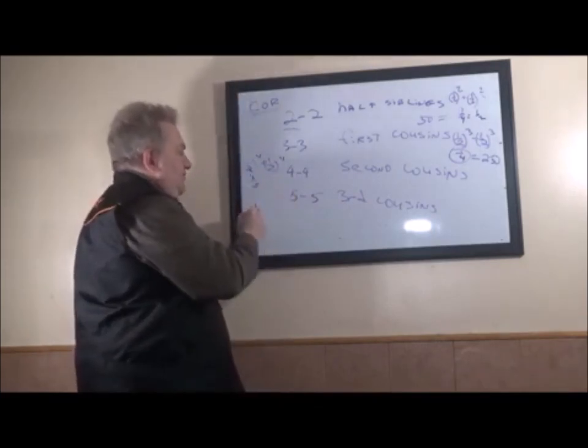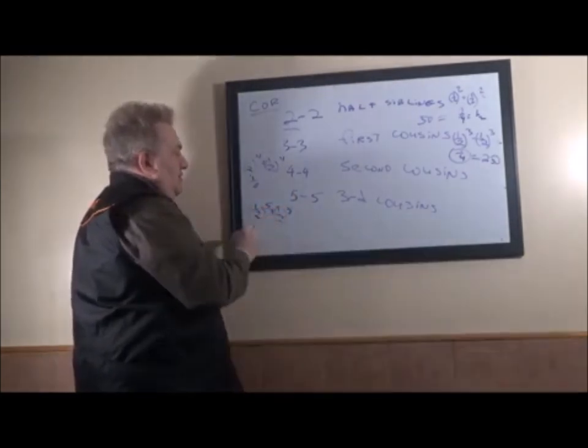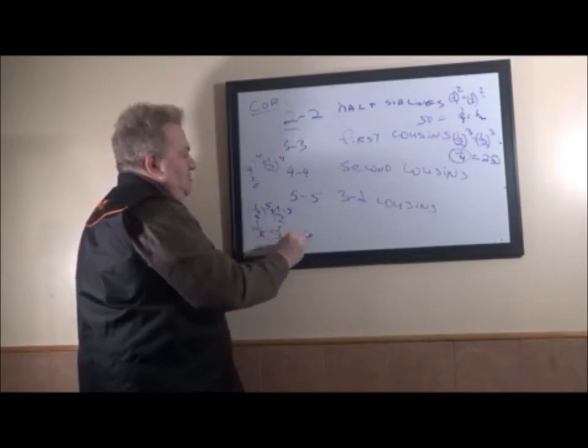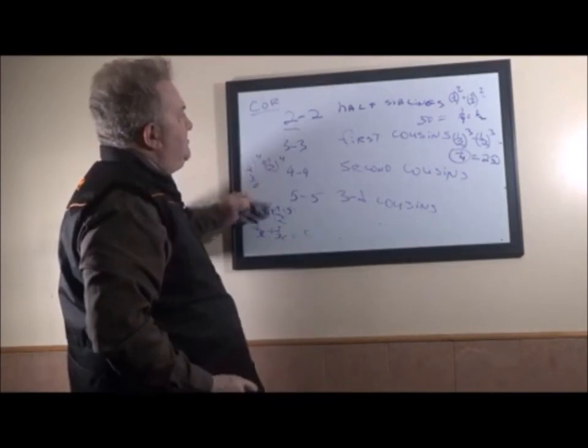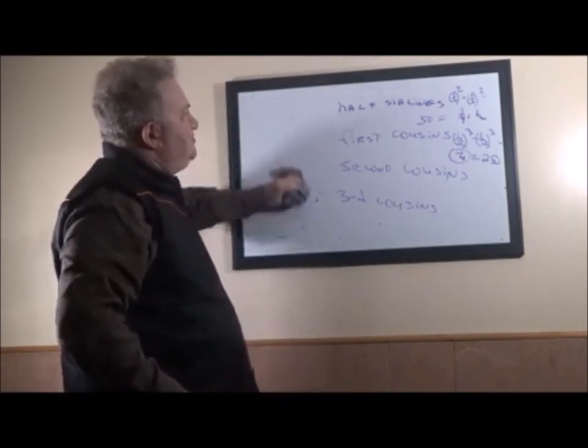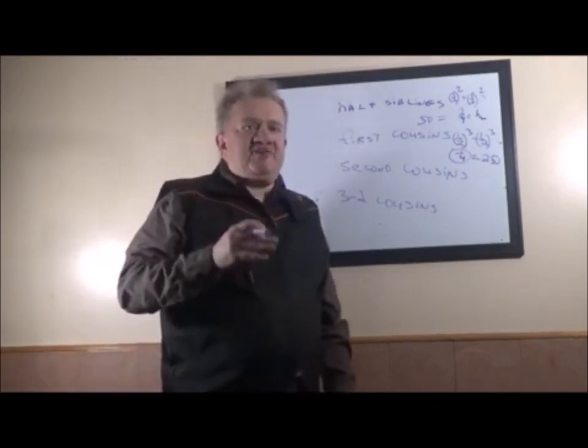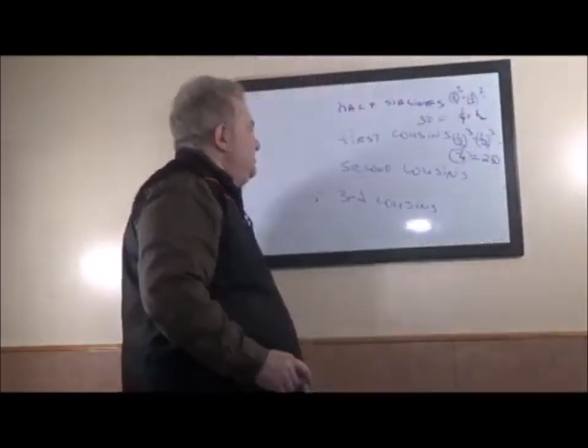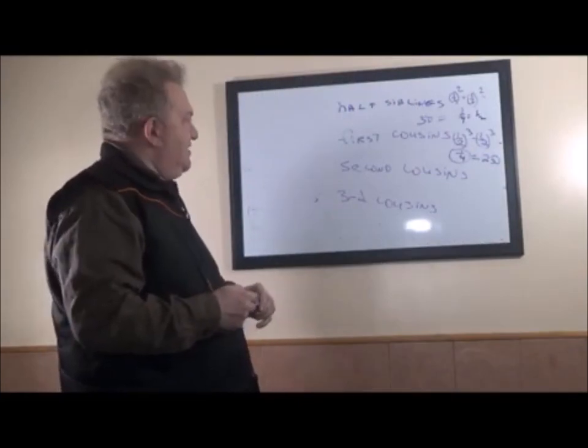Fifth power. One half to the fifth power plus one half to the fifth power. One thirty-second plus one thirty-second, which is two thirty-seconds. And so forth. In other words, the way you calculate the coefficient of relationship is to raise one half - why one half? Because it's half the relationship, not the whole relationship. And that's how you get the coefficient of relationship based on the ancestor.